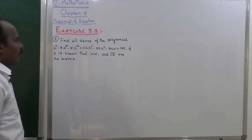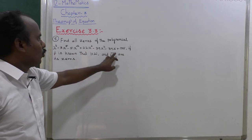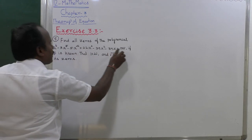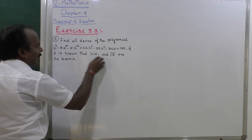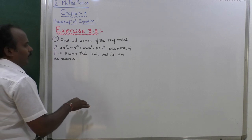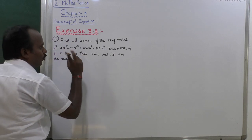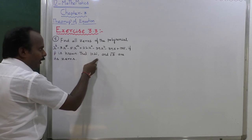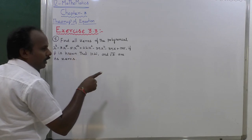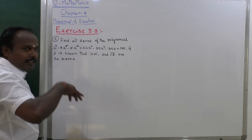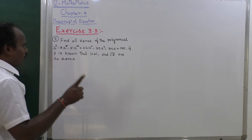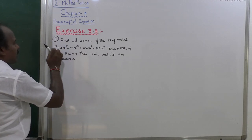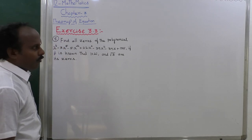It is given that 1 plus 2i and root 3 are zeros. Since complex and irrational roots come in conjugate pairs, 1 minus 2i is another root and minus root 3 is another root. So 4 roots are given directly. This equation has 6 roots total, so we need to find the remaining 2 roots.